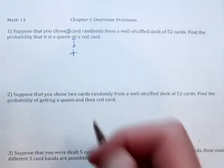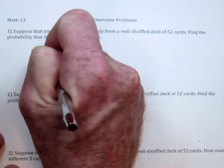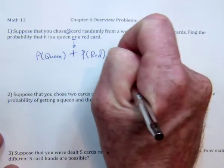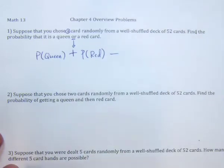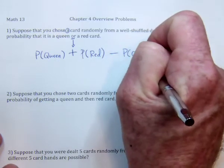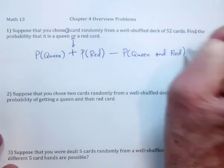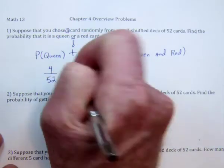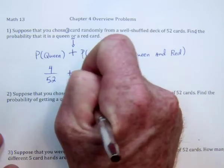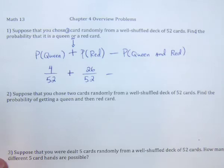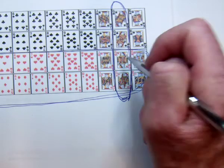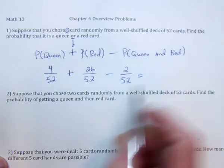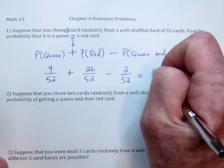So what I can do is go like this: I need to know what's the probability that it's a queen — the 'or' turns to plus — and then what's the probability that it's a red card. But then I have to subtract out the red queens because I counted them twice. The probability of queen is four out of 52, red cards is 26 out of 52, and the red queens — the queen of hearts and queen of diamonds — those are the two that got double counted. When you add this up, it's 30 minus 2, so it's 28 out of 52.